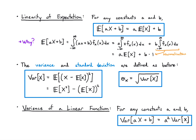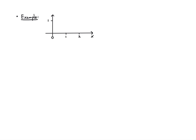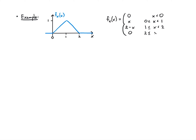Let's play around with these things using a concrete example. I'll start by drawing the PDF. The PDF is zero for a while, then goes up with slope one — so it's x — up to value one, then it goes back down with slope minus one as two minus x, and then it's flat at zero for x greater than or equal to two. This triangular shape is the setup we'll be working with for quite a while.